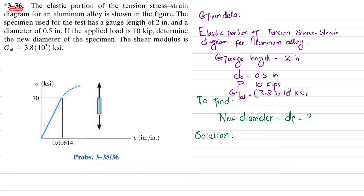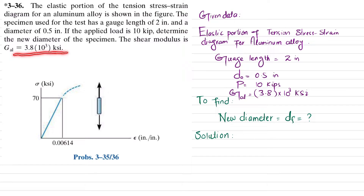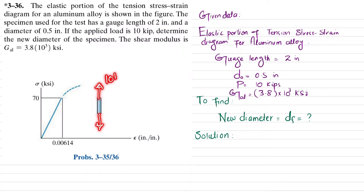Welcome back. Problem 3.36: the elastic portion of the tension stress-strain diagram for aluminum alloy is shown in the figure. The specimen used for the tensile test has a gauge length of 2 inches and a diameter of 0.5 inch. If the applied load is 10 kips, determine the new diameter of the specimen. The shear modulus is 3.8 × 10³ ksi. The stress-strain diagram shows the elastic portion where stress is 70 ksi and strain is 0.00614.